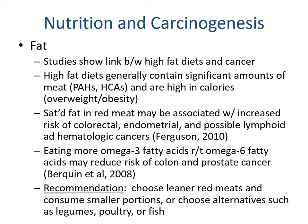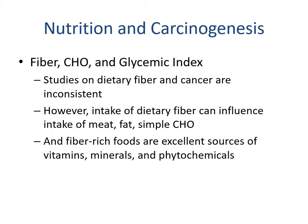Studies show a link between high-fat diets and cancer. High-fat diets generally contain significant amounts of meat, including PAHs and HCAs, and are high in calories overall, contributing to obesity. Saturated fat and red meat may be associated with increased risk of colorectal, endometrial, and possibly lymphoid and hematological cancers. Eating more omega-3 fatty acids relative to omega-6 may reduce the risk of colon and prostate cancer. The recommendation is to choose leaner red meats in smaller portions or choose alternatives like legumes, poultry, or fish.